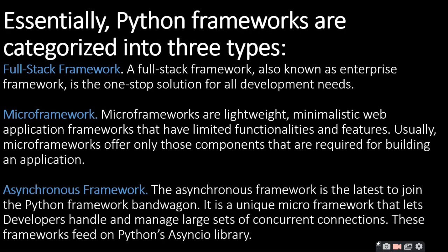Python frameworks are categorized into three types. The first is a full stack framework, also known as an enterprise framework, which is the one-stop solution for all development needs. The second is a Micro Framework — these are light, minimalistic web application frameworks that have limited functionality and features.